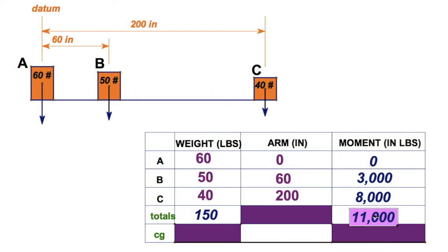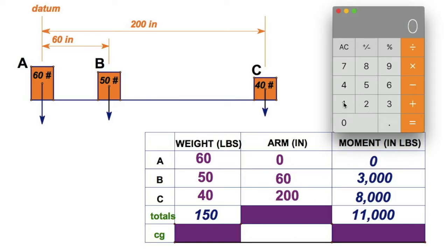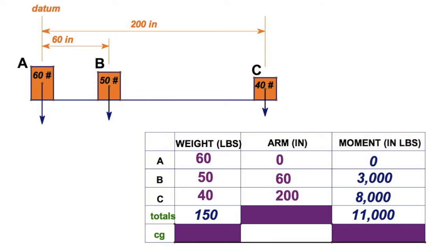Easy numbers here. 60 and 40 is 100, and I've got 50 more. So I have 150 pounds for these three blocks on this board with no weight. I'm going to add up these moments. Zero, that counts, plus 3,000, plus 8,000, and that's going to give me 11,000 inch pounds. Now I cannot add up these two numbers. That's not going to work. I'm going to take the moment, total moment, divided by the total weight, and I'll get the average arm.